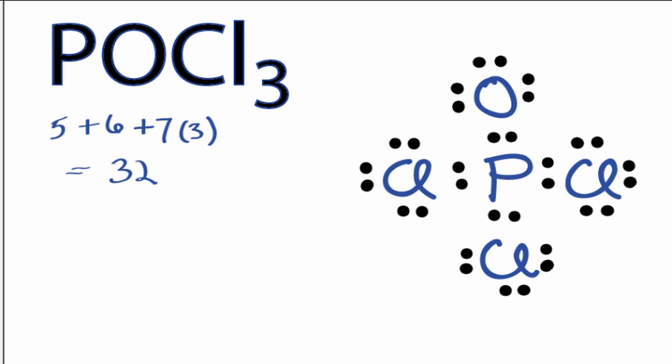Each of the atoms has 8 valence electrons around it. We've used 32 that we started out with. This looks pretty good. Everything has 8 valence electrons. The octets are full. We've used 32 of total valence electrons, which is what we started out with. This is a pretty good structure.